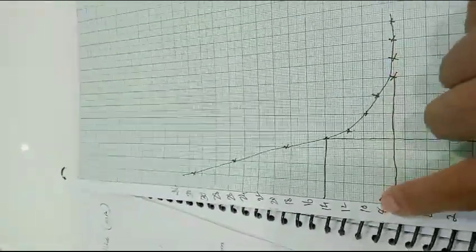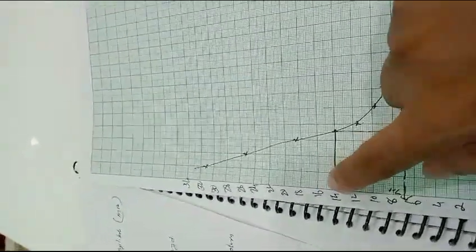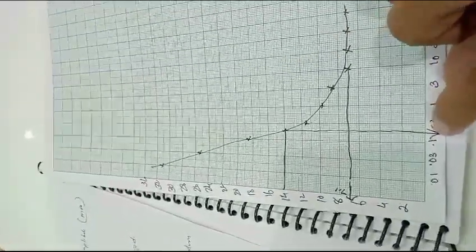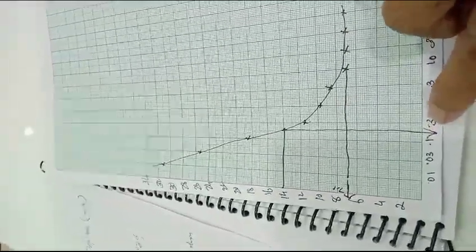Rheobase is 7.1. Double the Rheobase is 7.1 plus 7.1, is 14.2. Draw a line to the curve, come downwards. It is the Chronaxie coming between 0.1 to 0.3.